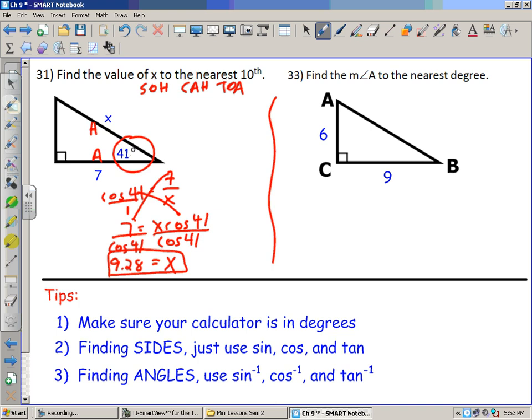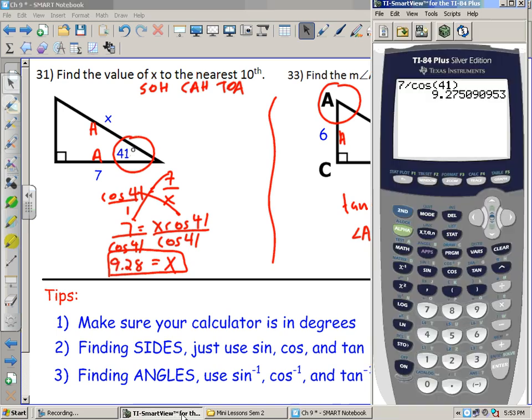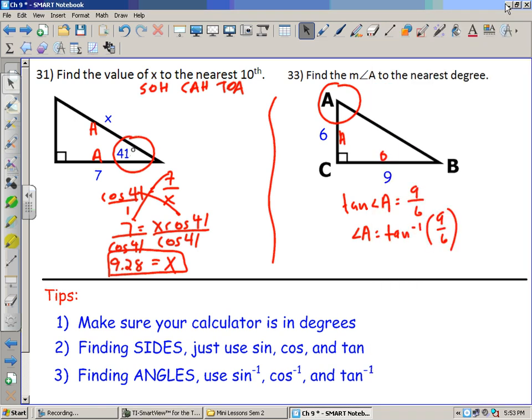Now I'm going to look at number 33. Now I'm not looking for the side, I'm looking for the angle. So I'm looking for angle A to the nearest degree. I'm going to use angle A. That's my opposite, that's my adjacent. So I'm going to use tan. Tan of angle A equals opposite 9 over adjacent 6. So angle A equals the tan inverse of 9 over 6. I'm going to do that in my calculator. So second tan, 9 over 6. I'll be using second tan because I'm looking for angles. And it's going to give me 56.3. So to the nearest degree, I'm about 56 degrees.